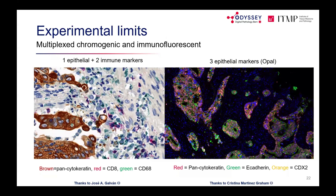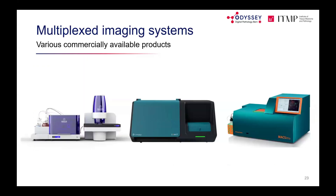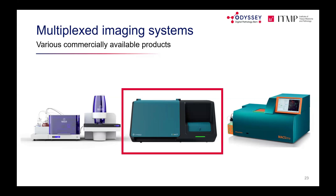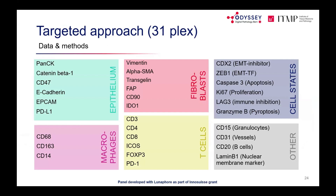Pathology labs are limited to 2–3 markers simultaneously, or up to 5 with advanced platforms like Opal. To go deeper — examining fibroblasts, T-cell phenotypes, vessels, extracellular matrix — highly multiplexed imaging platforms are needed, allowing consecutive cycles of staining, imaging, and removal to combine up to 100 protein markers in one image.